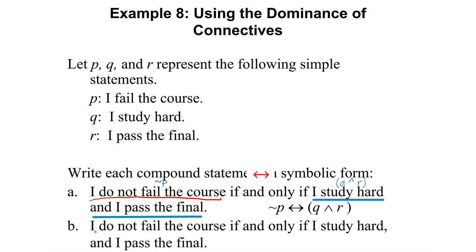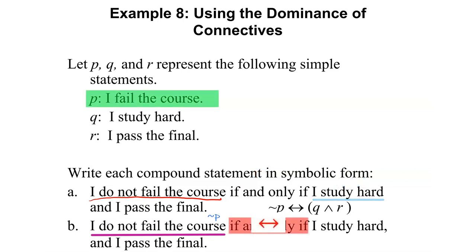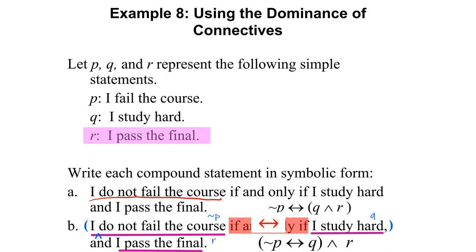Now for the version with a comma: 'I do not fail the course if and only if I study hard, and I pass the final.' The comma tells us to group 'I do not fail the course if and only if I study hard' together as one group. Then 'and' is a conjunction, and 'I pass the final' is R. So the comma denotes a parenthesis. If there is no comma, use the level of dominance to determine which statements to group.